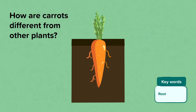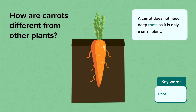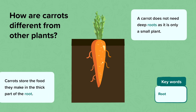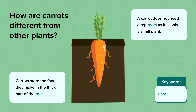A carrot is also a type of plant. Carrots do not need deep roots as they are only a small plant, which means that wind cannot blow it over easily. The carrot has a large thick root under the ground which is where it stores its food.